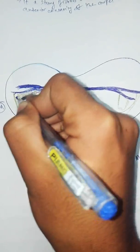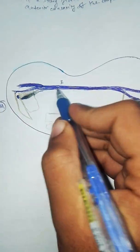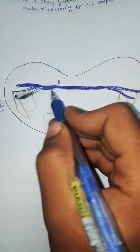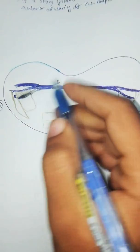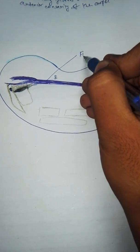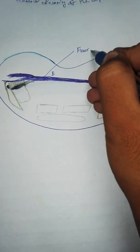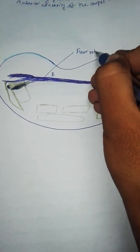The pisiform bone is medial to the flexor retinaculum. This is the flexor retinaculum.